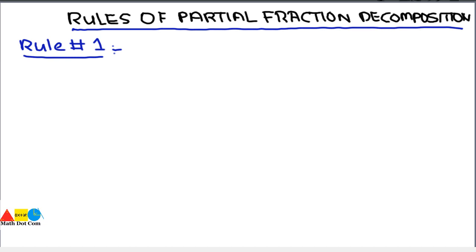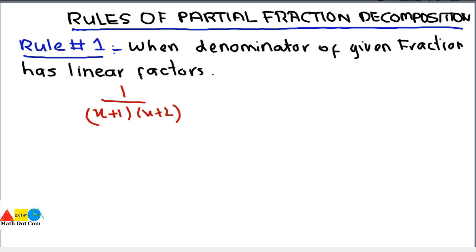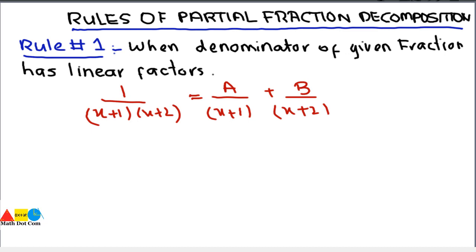Rule number one: rules are used because we come across different types of fractions having different types of factors in the denominator, due to which different methods have been devised to find the partial fractions. Rule number one is when the denominator of the given fraction has linear factors. For example, 1 divided by (x+1)(x+2). Since the denominator has linear factors, we write the partial fractions in the form A divided by (x+1) plus B divided by (x+2), where A and B are to be found using the method of partial fraction decomposition.